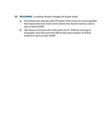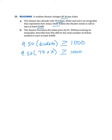Number 23, we have the student theater charges $9.50 per ticket. They've already sold 70 tickets. We want to know how many more tickets they need to earn at least $1,000. So we're going to take $9.50 times tickets. That needs to be at least, so greater than or equal to $1,000. For the ticket part, we're told that we've already sold 70. So we want to know how many more we need to be greater than or equal to $1,000.